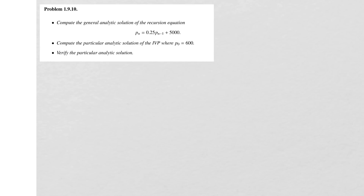In this lesson, we're going to look at problem 1.9.10 from Modeling in a Real and Complex World. The first thing it asks us to do is compute the general analytic solution for this recursion equation: p_n = 0.25 times p_{n-1} plus 5000.